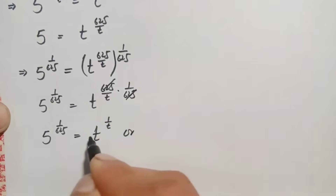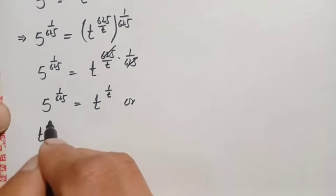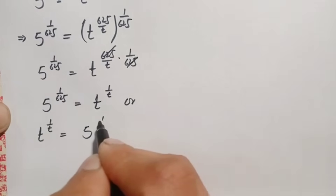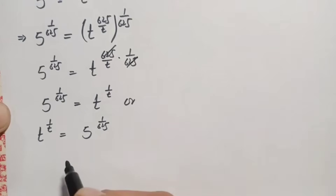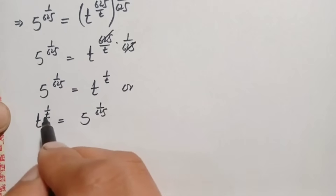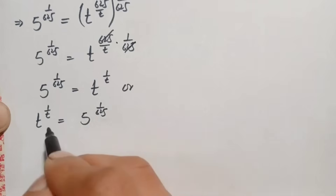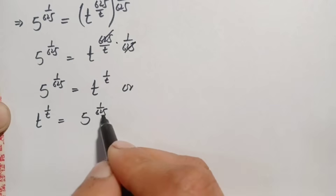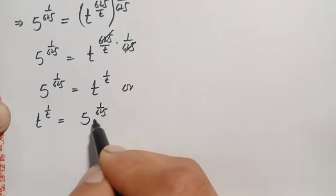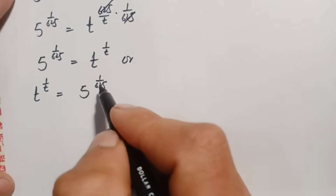So this equation becomes 5 raised to power 1 over 625 is equal to t raised to power 1 by t. We can also write this by moving the variable to the left-hand side: t raised to power 1 by t is equal to 5 raised to power 1 over 625. Now on the left-hand side there is t in the base and t in the denominator of the power — the same structure. We need to make the right-hand side match this form.